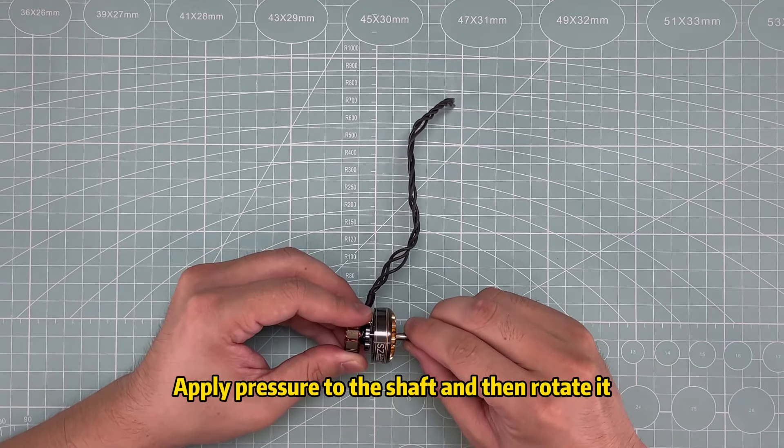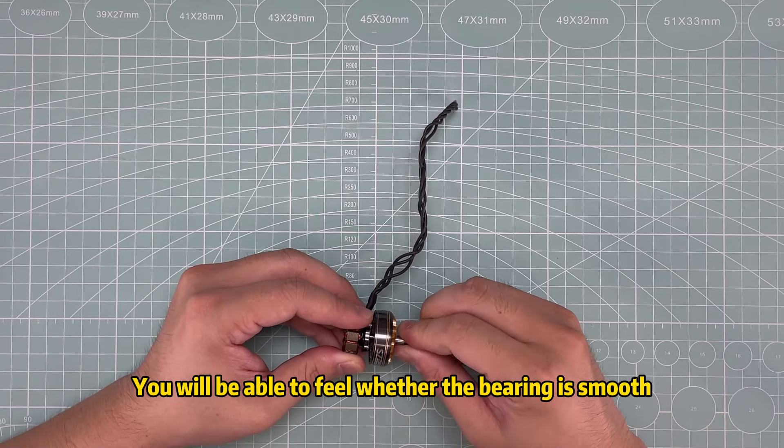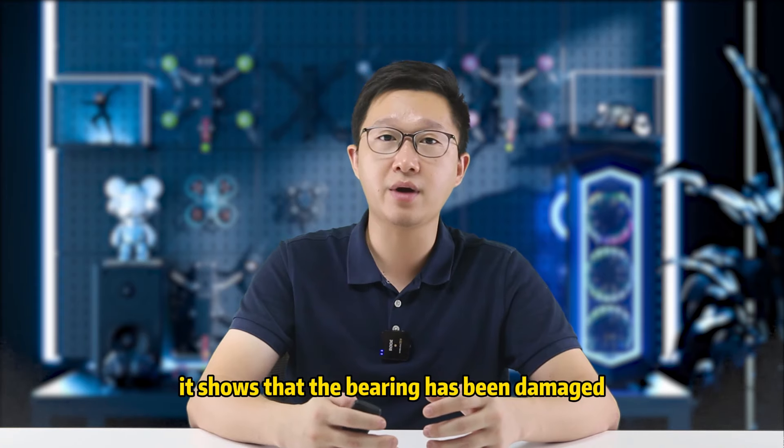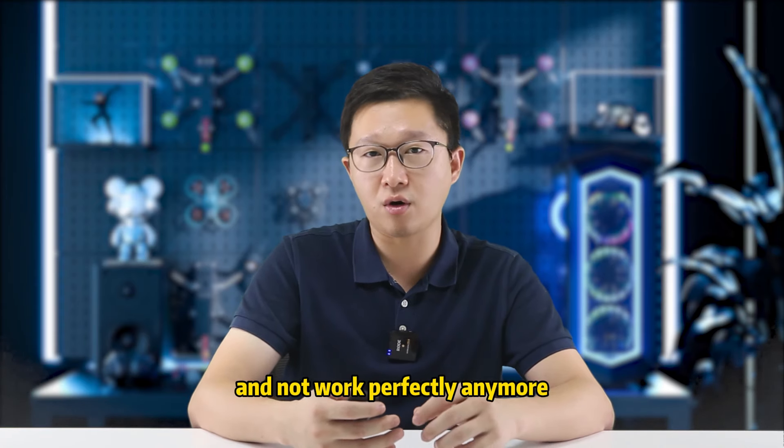Apply pressure to the shaft and then rotate it. You will be able to feel whether the bearing is smooth. If you hear some clinking sound, it shows that the bearing has been damaged and not work perfectly anymore.